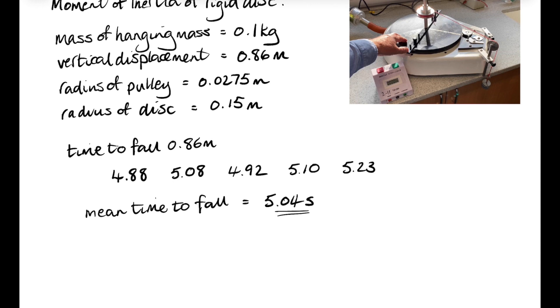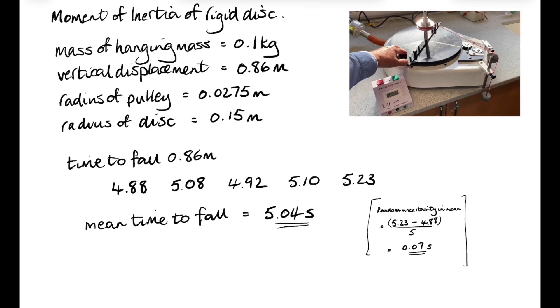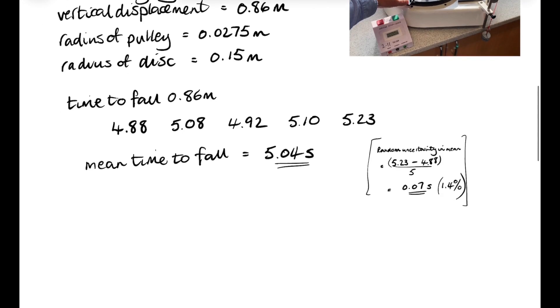And of course, we should work out the random uncertainty in that mean, just to get an indication of how confident we are with that measurement. And that works out to be about 1.4%.